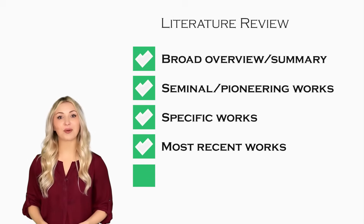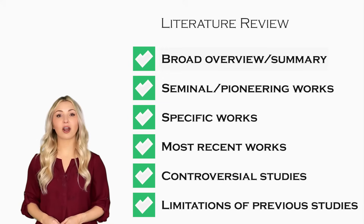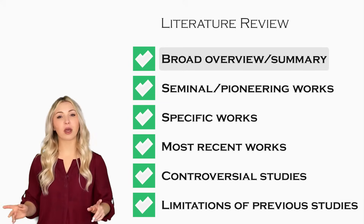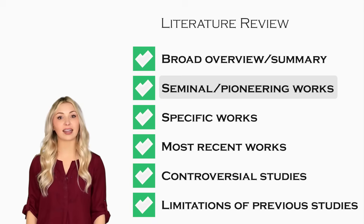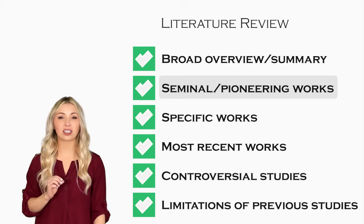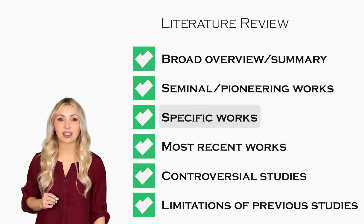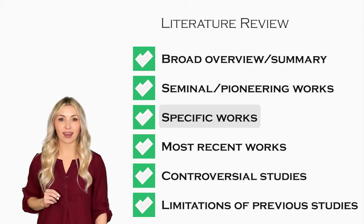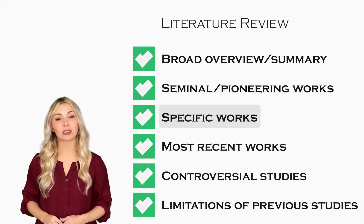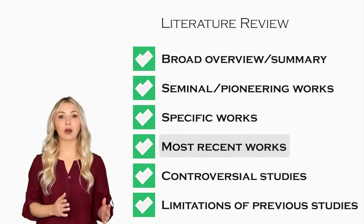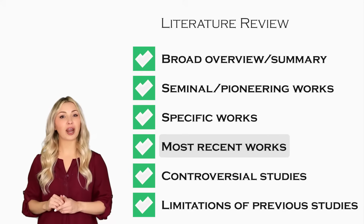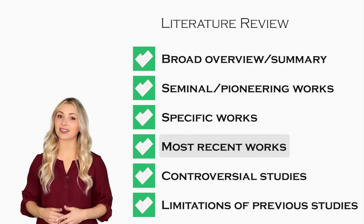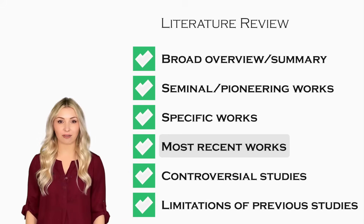Generally, in your literature review, you can talk about the following things. You can start with a broad summary of previous research on the topic. Then you can speak about seminal or pioneering works in literature — historical papers and famous people who kick-started research in your field. Then you can talk about specific works related to your topic, citing prominent papers relevant to your specific study. Then you can talk about the most recent papers published in your field. Remember, the papers you claim to be recent should have been published in the last two to three years and reflect the newest discoveries and theories.